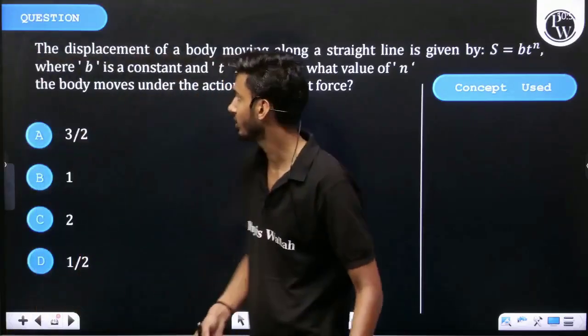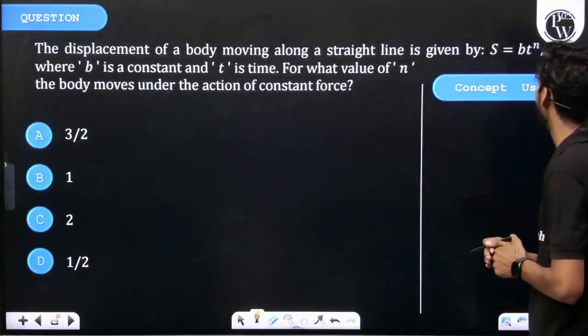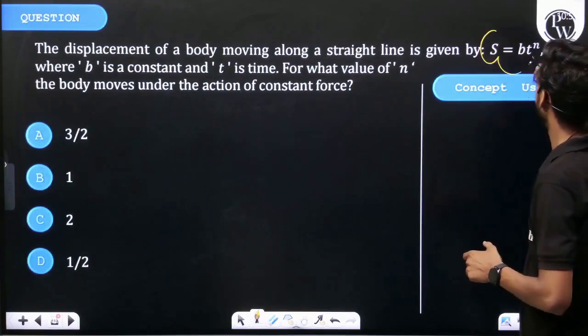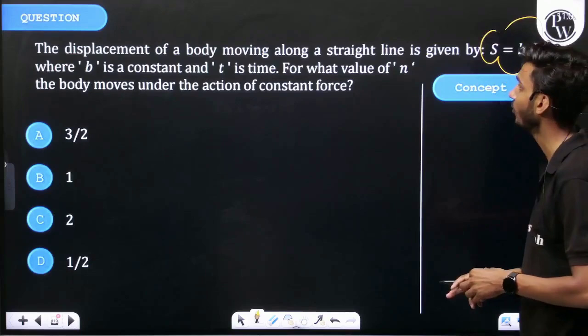Okay, let's see the question. The displacement of a body moving along a straight line is given by S = bt^n, where b is a constant and t is time. For what value of n does the body move under the action of constant force?